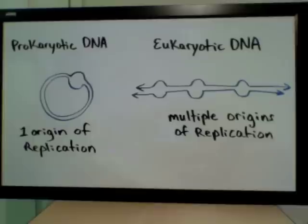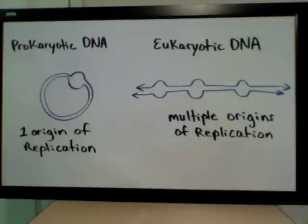There is a sequence of nucleotides at the origin of replication that signals to replicating enzymes where to begin replication. Replication occurs in both directions of the bubble, so the bubble elongates and grows until we finally have two new, complete helical DNA structures at the end.